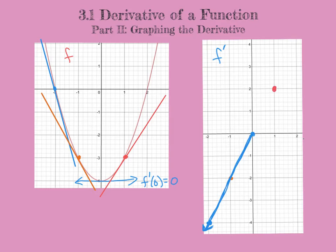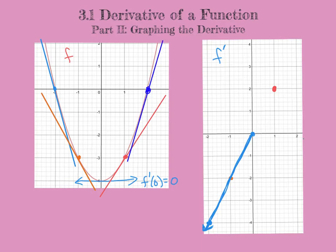That makes sense — we're continuing on our path. We'd expect the derivative to be four when x is two. I'll draw that tangent line in navy blue. One point on the tangent line is 1.5 comma negative two, and we're rising two and running half. Two divided by one half is four — dividing by a fraction means multiply by that fraction's reciprocal.